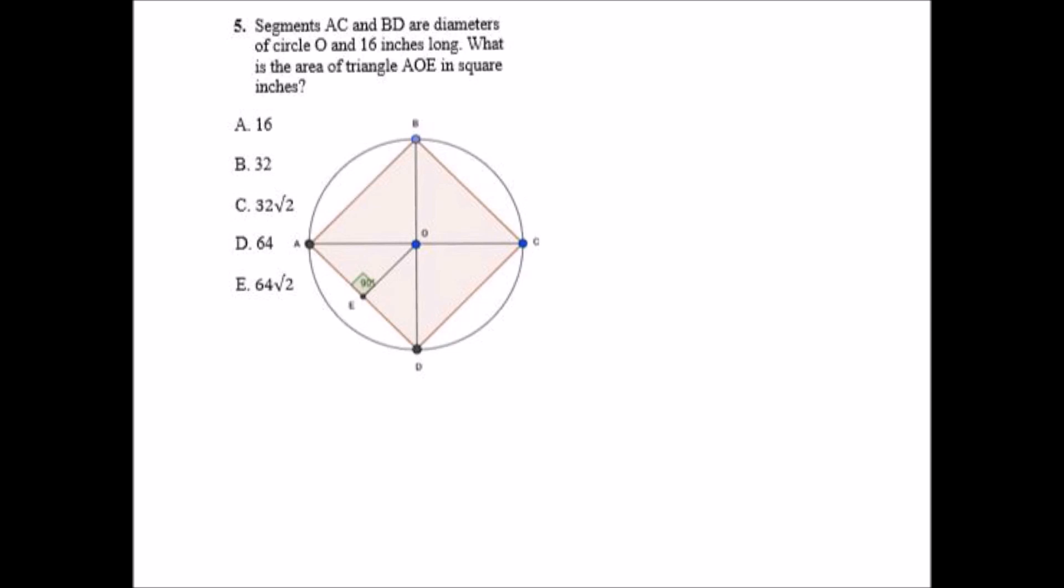In question five, we are told that segments AC and BD are diameters of circle O, and that they are 16 inches long. What is the area of triangle AOE? So what we're really trying to do is find the area of this little triangle right here. We know that AC is a diameter that equals 16 inches long, which means AO, this segment right here, must be 8 inches.